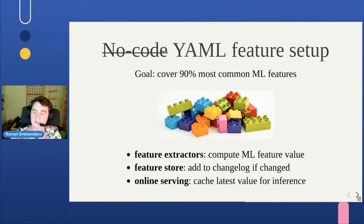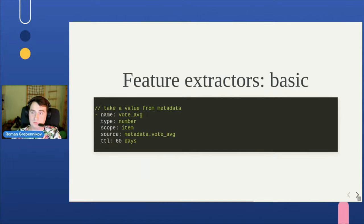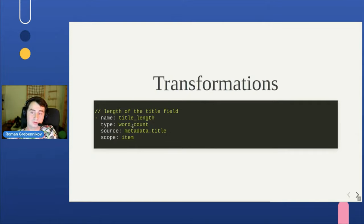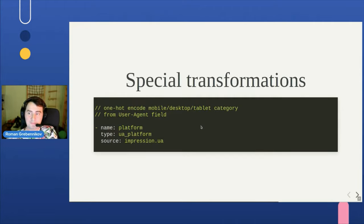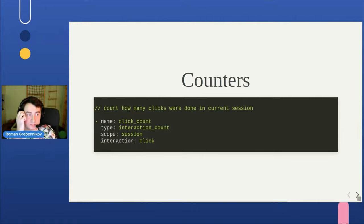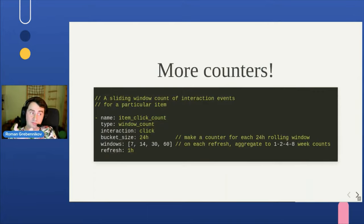Features are added to the feature store and served for inference and model training. For example, Metarank can take a number from an event as-is, do one-hot encoding of a low-cardinality field like movie genres, compute a word count of an item's title field, or compute an n-gram between a title and a query. It can also parse a user-agent field from impression events and one-hot encode mobile, desktop, and tablet categories. You can also compute counters — for example, how many clicks were made for a customer within a session or the number of purchases in the past.